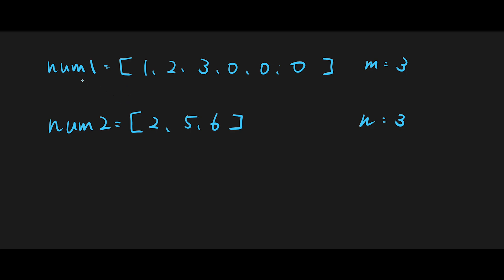Let me explain with this example. nums1 is 1, 2, 3 and nums2 is 2, 5, 6. First of all, let's think about how we can iterate through nums1. We have two choices: from the beginning or from the end.